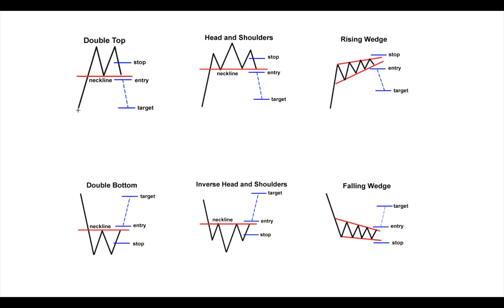The double top is a reversal pattern that forms after a nice long bull run. After a rally to the upside, you'll see a spike down or correction, then a spike back up to the same level, and another spike down — forming a neckline between the two lows. You enter on the break of the neckline, and the target is the distance from the top of the double top down to the neckline. It looks like an M formation. This means the bullish trend is exhausted and we're seeing correction and reversal.